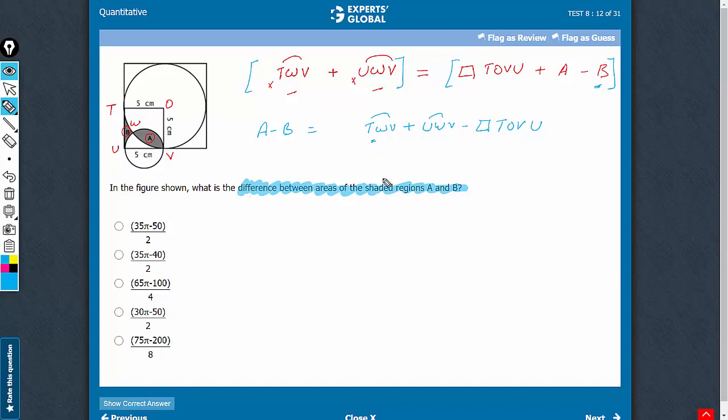The area of this sector is going to be one-fourth the area of the bigger circle here. The area of this sector is going to be half the area of the smaller circle here. And the area of the square is going to be simply the square of the edge here, minus 5 square.